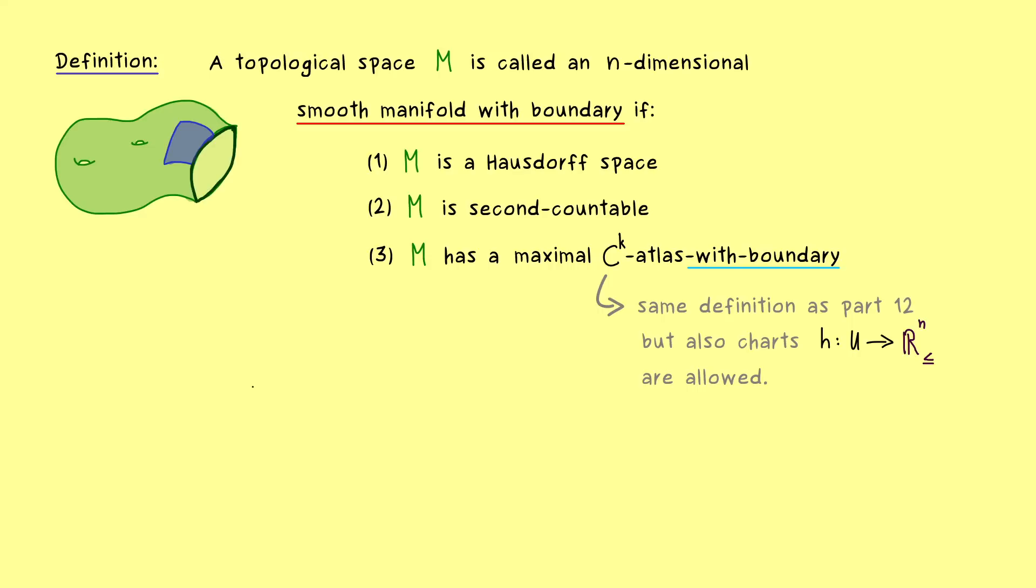However, in the case that we have such a smooth manifold with boundary, we can also define the boundary. And at this point, you already know the notation. We have ∂M. And it's not hard to define at all because we can look at all the points on the manifold for which there is a chart as before. So a chart that maps into the half-space. And here we require that p lies in U and h of p is mapped to the boundary in the half-space. So these are the points that describe the boundary of our manifold M.